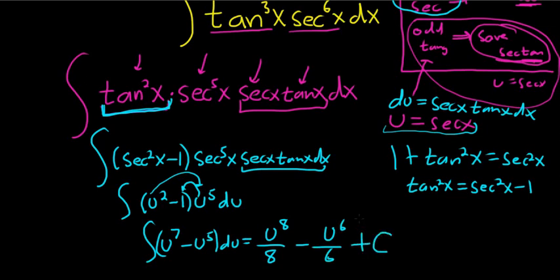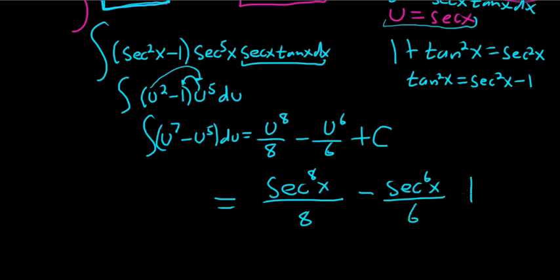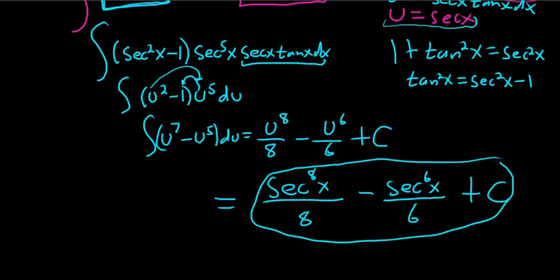And the very last thing is to replace all of the u's with secants. So this is equal to secant to the 8th power of x over 8 minus the secant to the 6th power of x over 6 plus our arbitrary constant of integration c. So remember, even secant, save a secant squared, odd tangent, save a secant tangent.